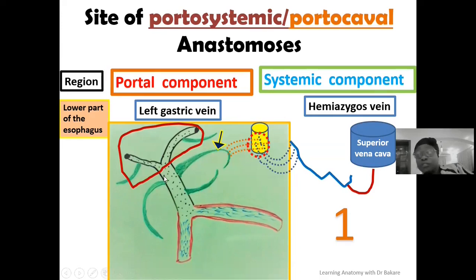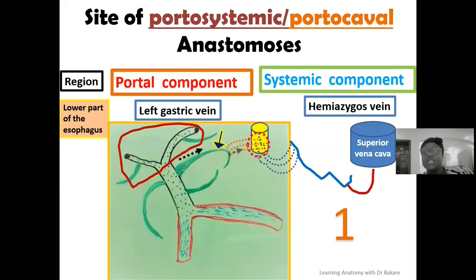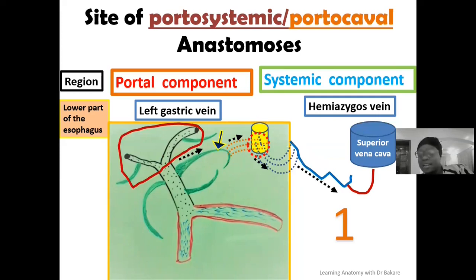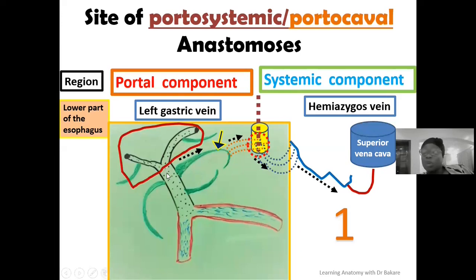When there is blockage of the portal vein, blood directed backwards due to the valveless nature of the portal vein will flow into the oesophageal branches of the left gastric vein. It will run through the region where this anastomosis is created and be delivered into the oesophageal branches of the hemiazygous vein, before being collected into the hemiazygous vein. The hemiazygous vein will push this blood further into the azygous vein, then into the superior vena cava, and finally to the right atrium.